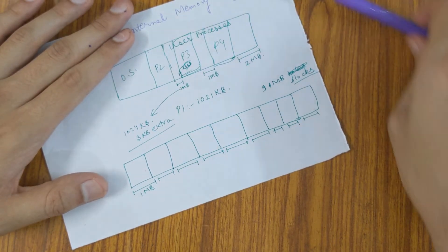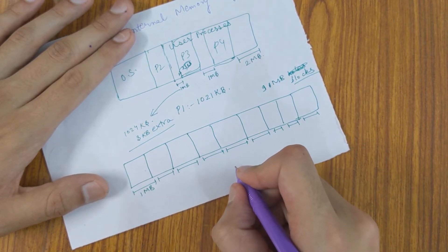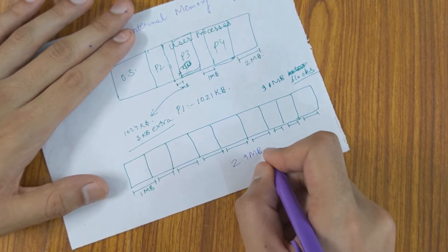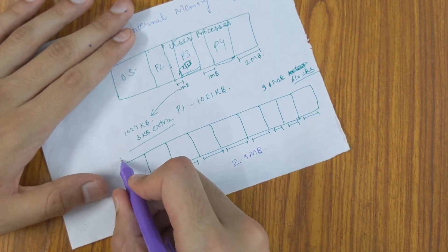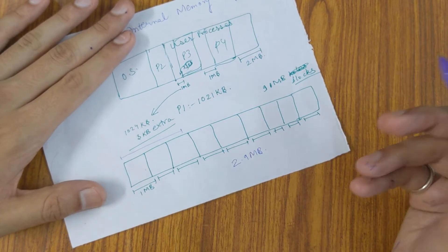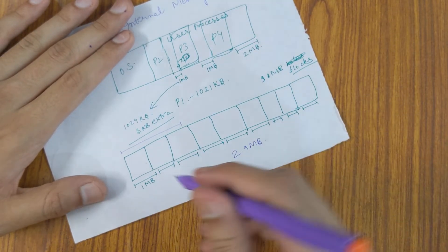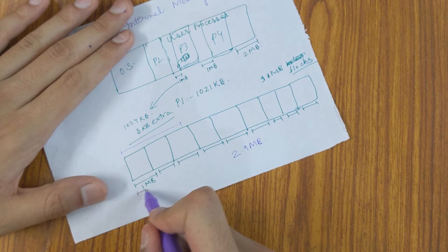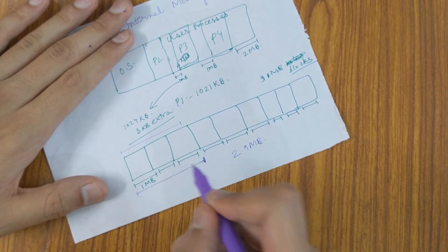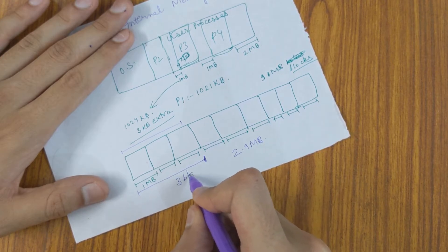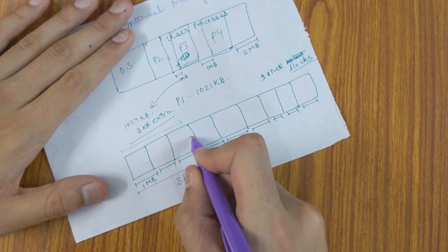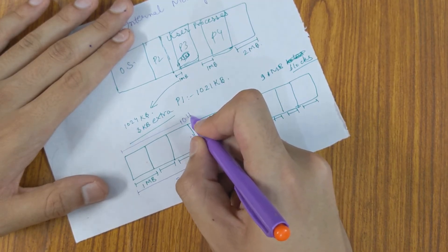Now what we do is, let's say a process comes with a memory requirement of 2.9 MB. Then instead of allocating this much, we allocate in chunks of holes, that is chunks of blocks, that is we will allocate the nearest possible number of blocks which is fulfilling it. So, that is 3 blocks, which is 3 MB. Here 1 MB we are allocating 0.1 MB we are allocating extra.